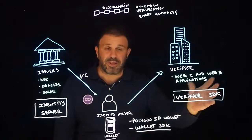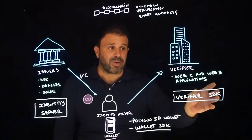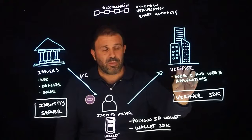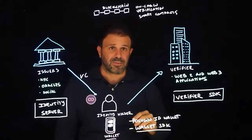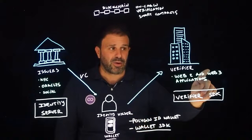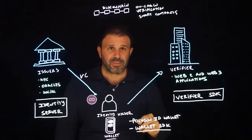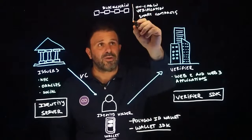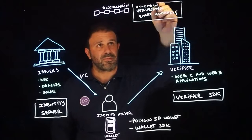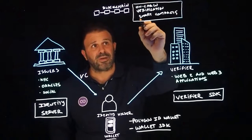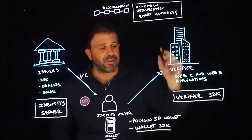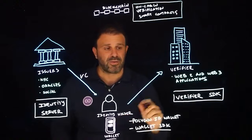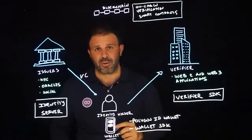These SDKs are implemented in JavaScript and Golang and can be included in any DApp or any Web2 application — but also, very importantly, they can be included in smart contracts. Polygon ID also offers on-chain verification, meaning we have implemented smart contracts that interface with the verifier SDK and offer the ability to verify credentials on-chain.